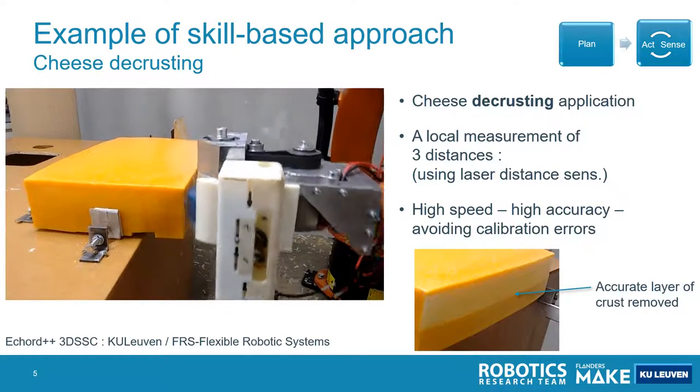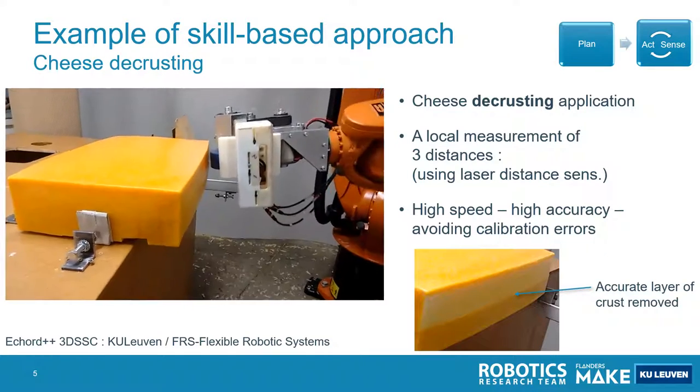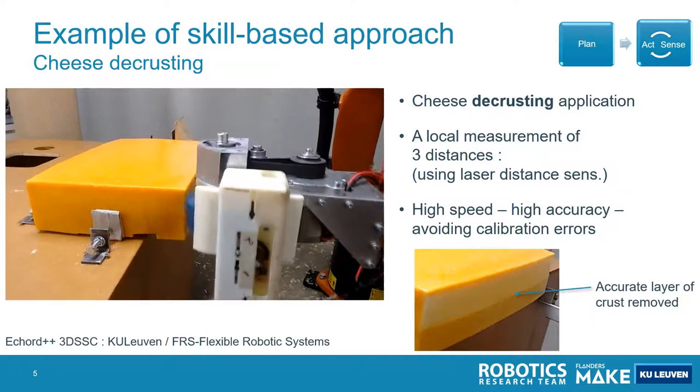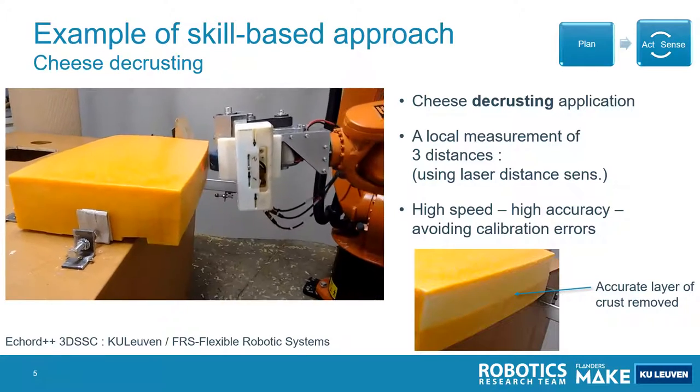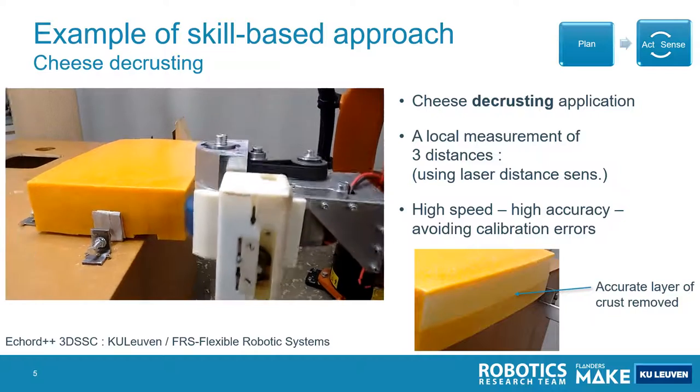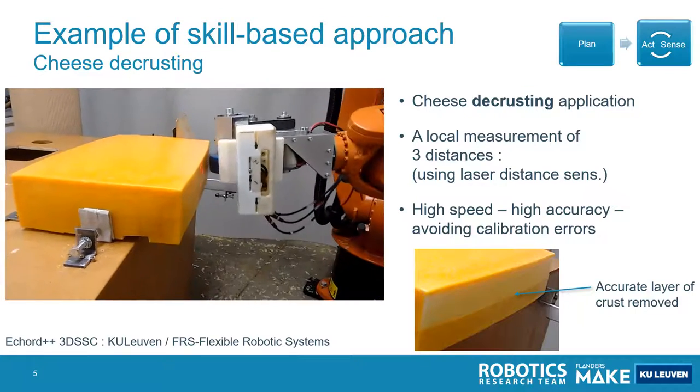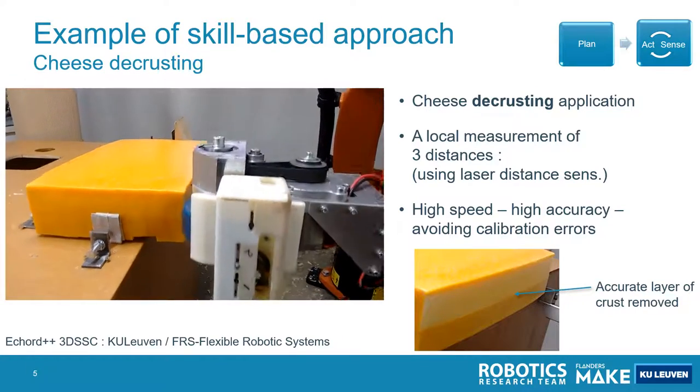And you need absolute positioning for both the measurement cell and the robot. Calibration issues are a big problem in such a setup. This setup in fact follows the traditional sense-plan-act approach.